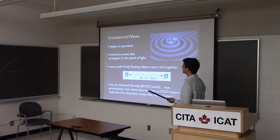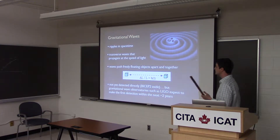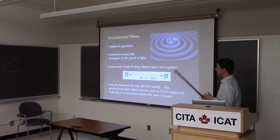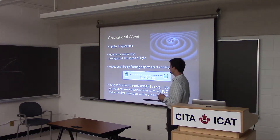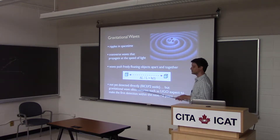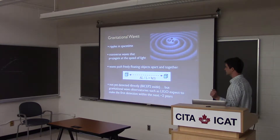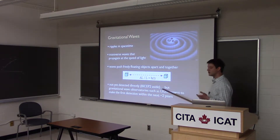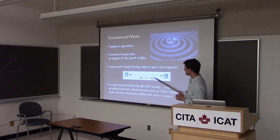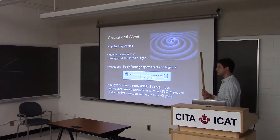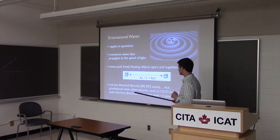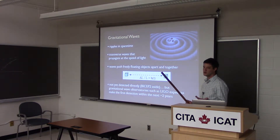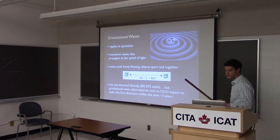Gravitational waves are ripples in spacetime — transverse waves propagating at the speed of light. Two freely floating masses will be pushed apart and together at the gravitational wave frequency. They haven't yet been directly detected, though observatories like LIGO and Virgo aim to measure the displacement of freely floating mirror masses via laser interferometry. They are currently upgrading and expect to detect gravitational waves from compact object binaries within the next couple of years.